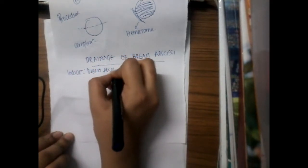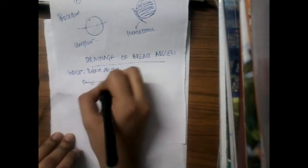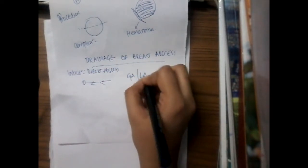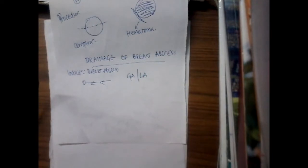The patient is placed in supine position and then you will give general anesthesia or local anesthesia can be given. Then you will paint the area with betadine, you will drape the patient.